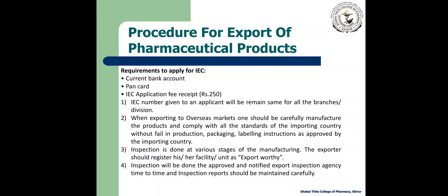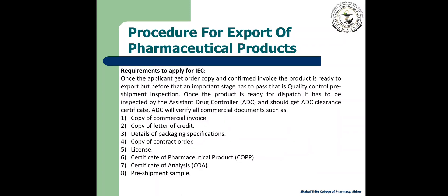Inspection is done at various stages of manufacturing by the importing country. The exporter should register his or her facility or unit as export worthy. Inspection will be done by approved and notified export inspection agencies from time to time, and the inspection report should be maintained carefully. Once the applicant gets the order copy and confirms the invoice, the product is ready to export, but before that it must pass quality control pre-shipment inspection.